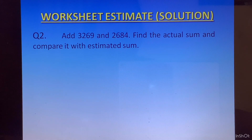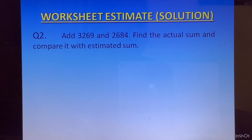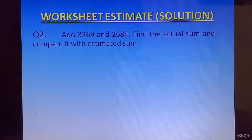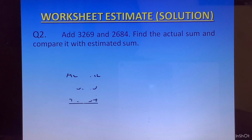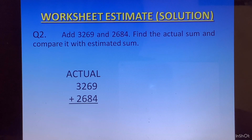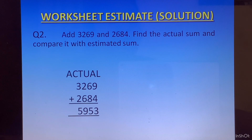Question 2: Add 3269 and 2684. Find the actual sum and compare it with the estimated sum. For the actual sum, we will write both the numbers and add them. When we add, we get the answer as 5953.